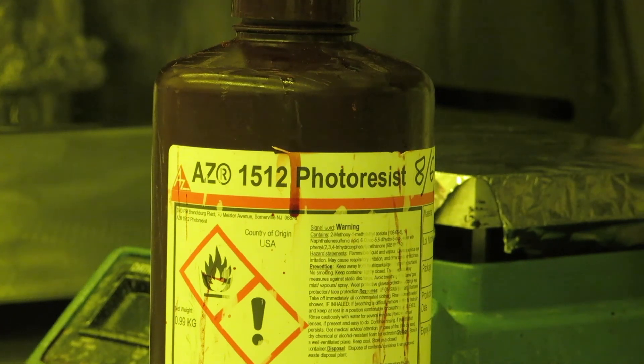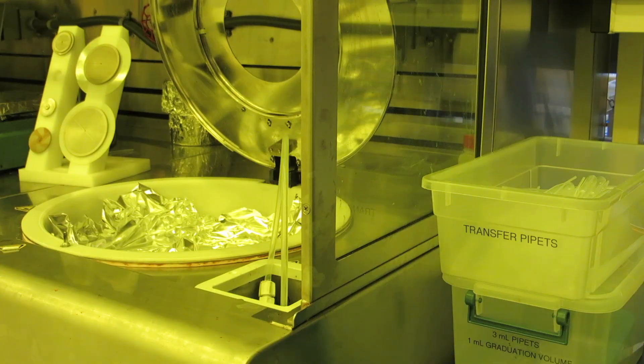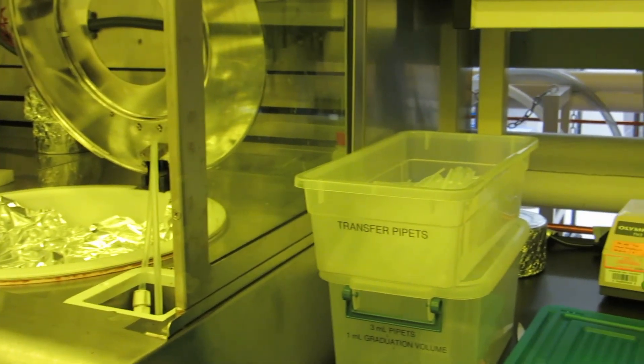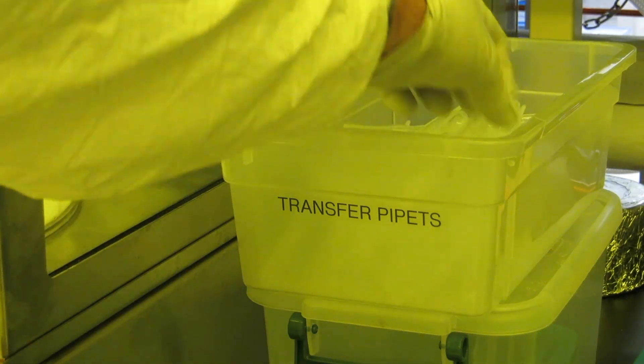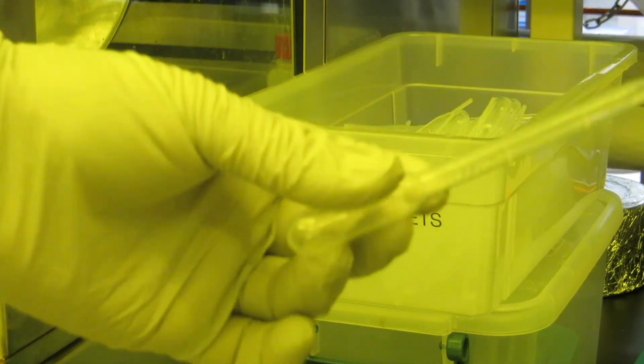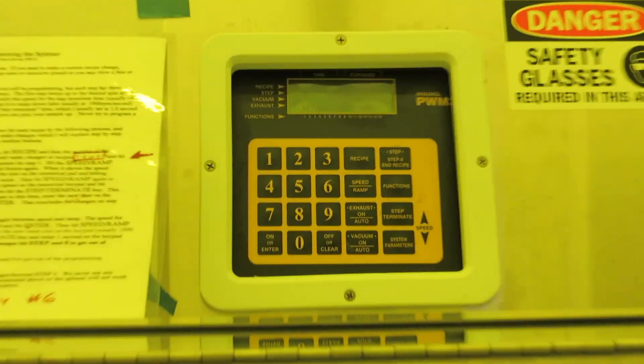To the right of the spinner are some disposable polyethylene pipettes. These work well for dispensing resist onto the chip or wafer. Before you can start spinning, you need to program the spinner.